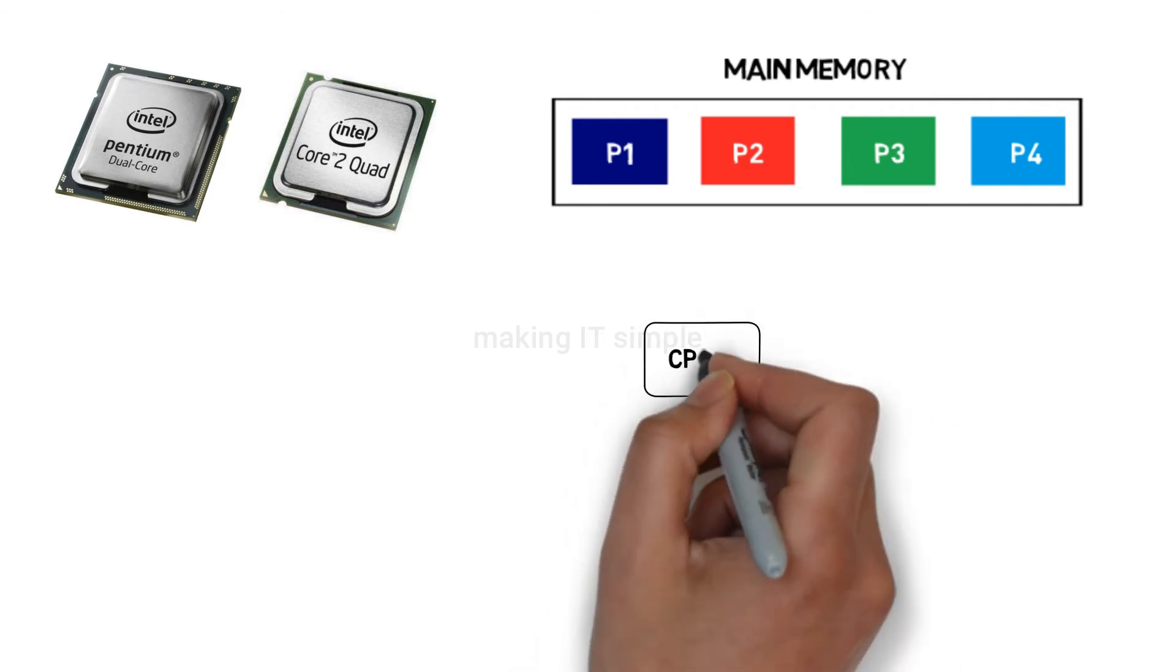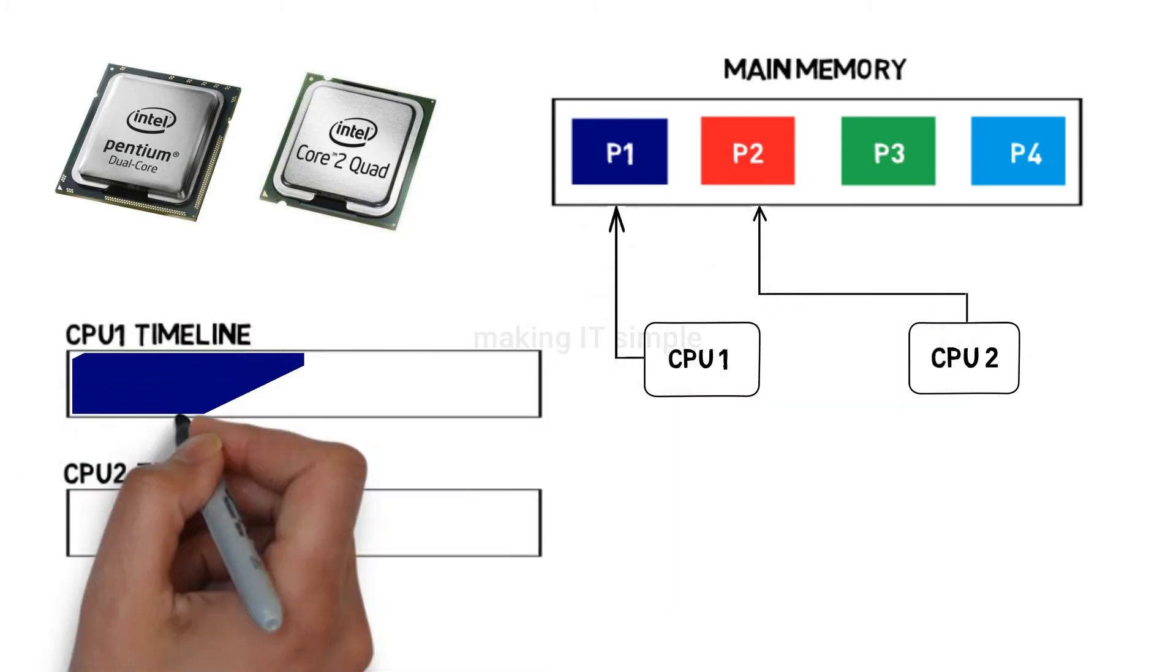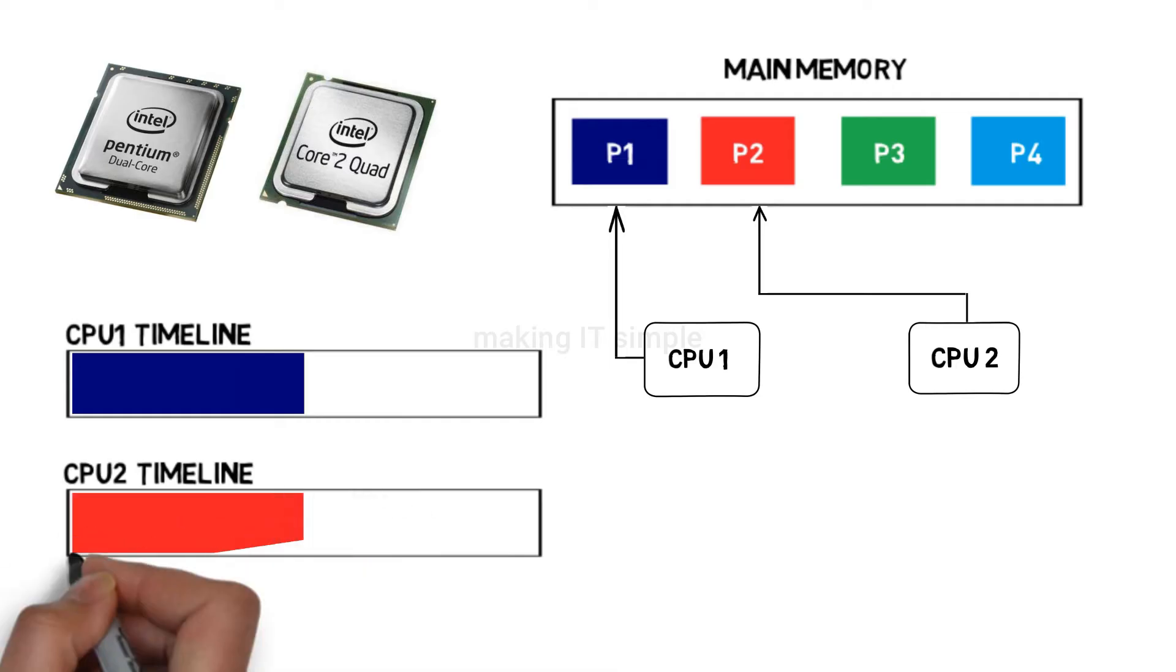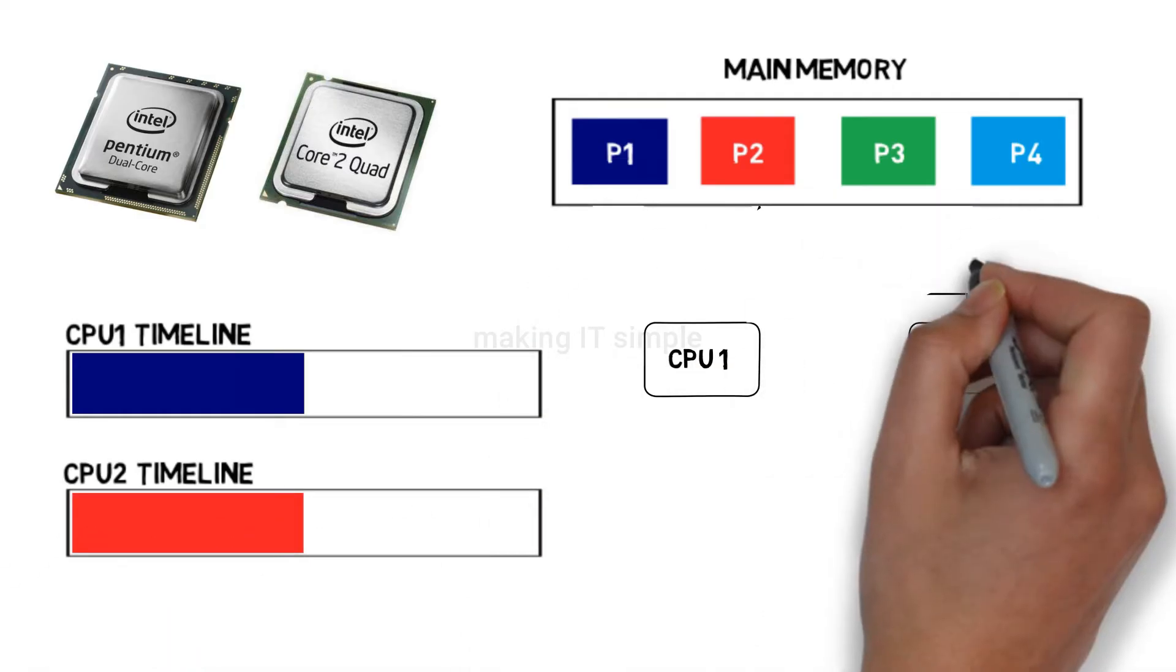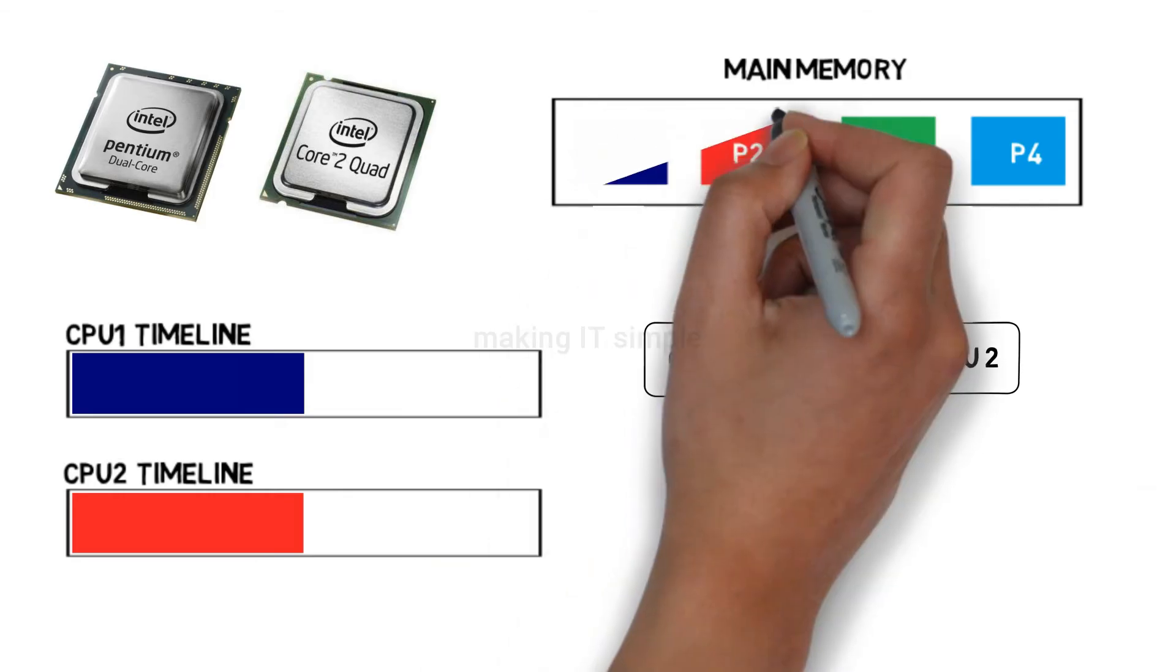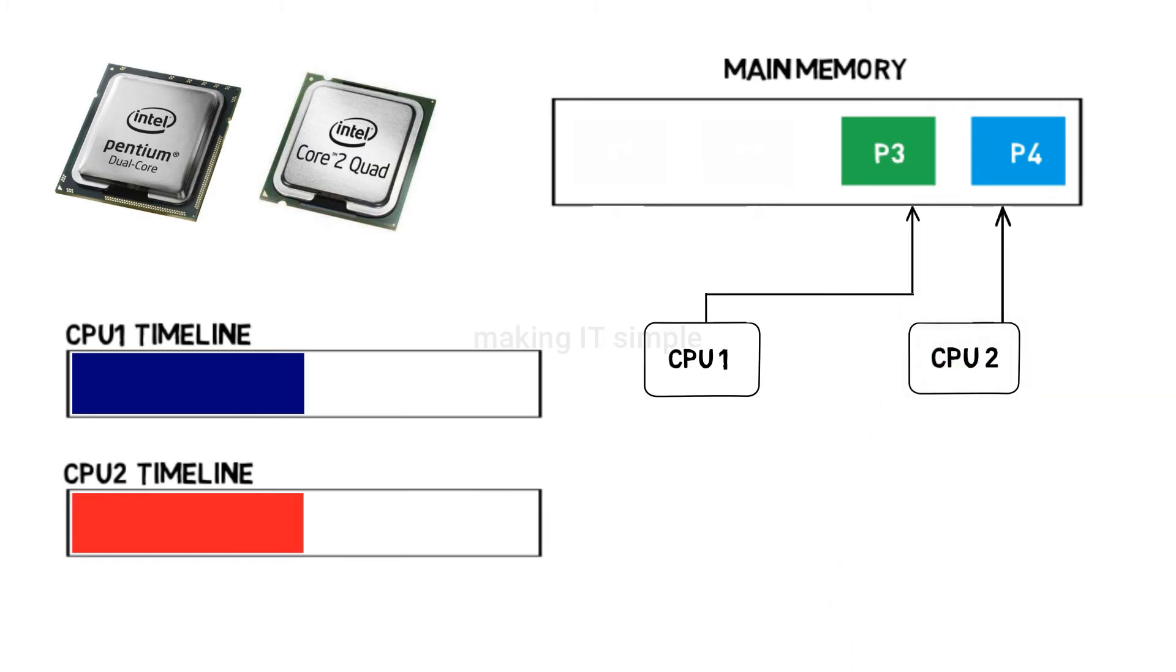Let's consider a two-processor system. Operating system assigns process to each CPU. Each CPU works on separate process, which makes the processing very fast. After completing the execution of processes they are removed from the main memory. After this, the operating system assigns new process to the CPUs.